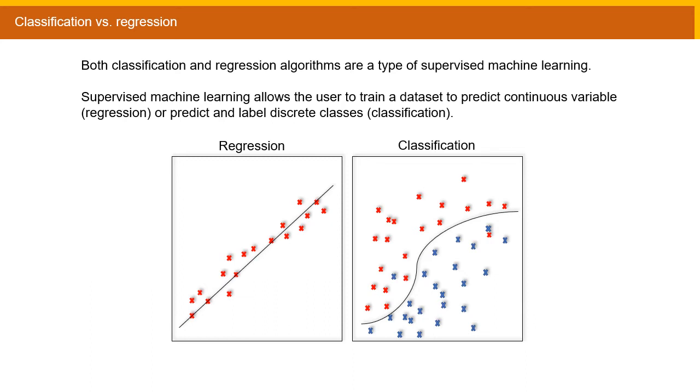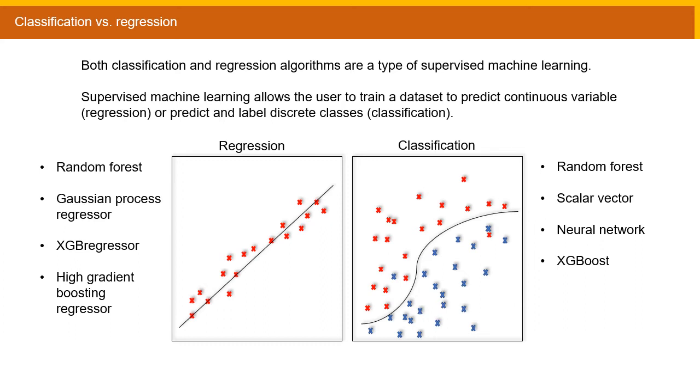In this study, I used two types of supervised machine learning, classification and regression. Supervised machine learning allows the user to train a dataset to predict and label discrete classes, which is what classification is, but also to predict a continuous variable, which is what regression is. These diagrams here are just to help illustrate both these points. The classifiers used to produce the prediction models were random forest, scalar vector, neural network and XGBoost, while the regressors for continuous variable prediction were random forest, Gaussian process regressor, XGB regressor and high gradient boosting regressor.